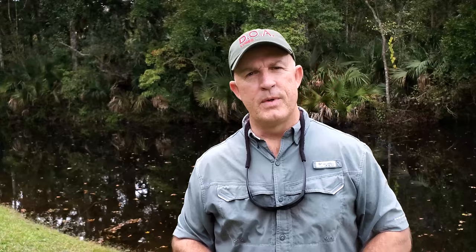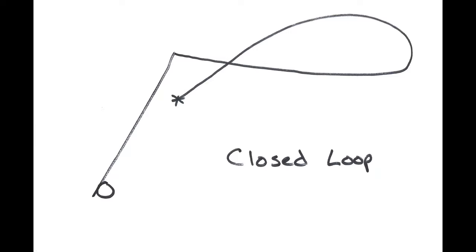That can cause the tailing loop. So look at what the tip of the rod is doing in this video, especially in the slow motion, and then you can follow the fly leg of the cast, and it'll show you exactly what the tip was doing.